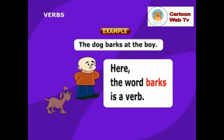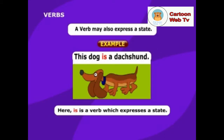Here, the word 'barks' is a verb. A verb may also express a state. Example: this dog is a dachshund. Here, 'is' is a verb which expresses a state.